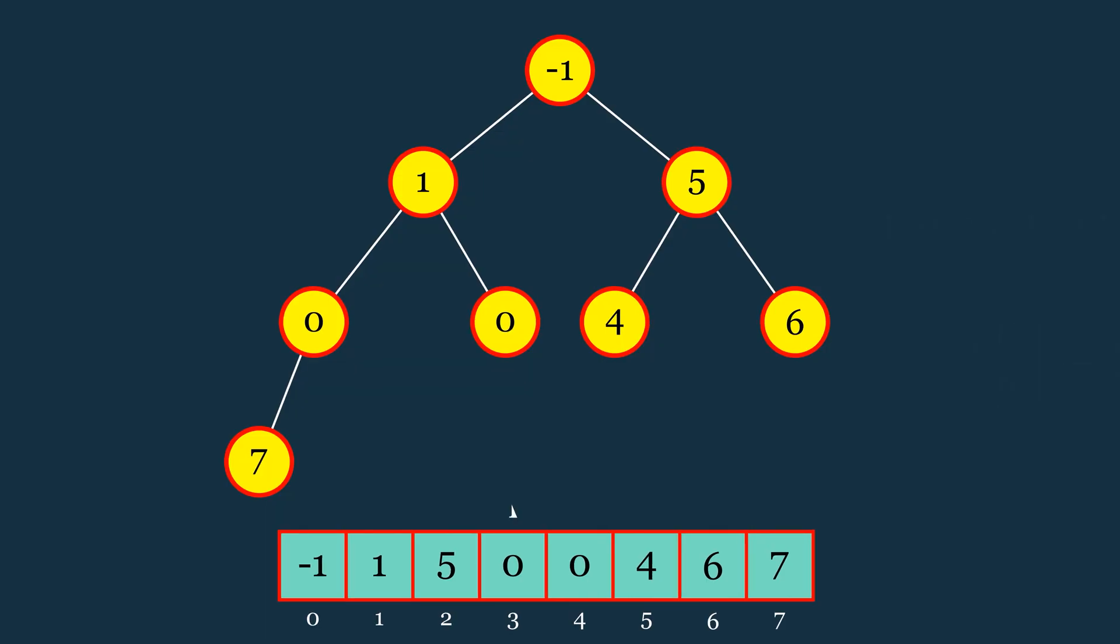So, we'll begin at the last non-leaf node and iteratively perform the Heapify Down operation on each of these nodes, working our way up to the root. By applying Heapify Down from the bottom-up, we ensure that every sub-tree satisfies the max heap property before moving up a level.